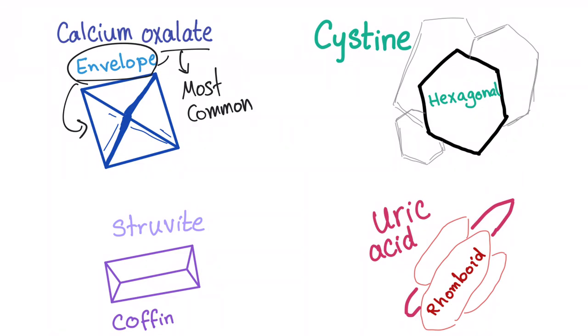Let's go to cysteine stones. They are hexagonal in shape. How do I remember it? Cis looks like six. Especially if you know French or Spanish, it's pretty close.